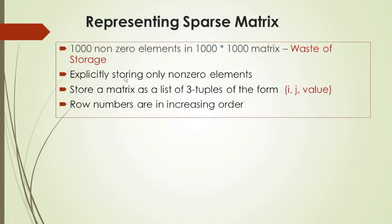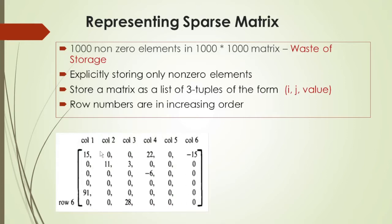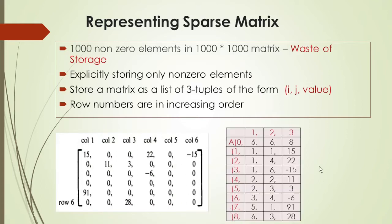For a sparse matrix, we represent only the non-zero elements. We represent the matrix as a list of 3-tuples of the form (i, j, value). Here i denotes the row, j denotes the column, and value is the non-zero element at the i-th row and j-th column.